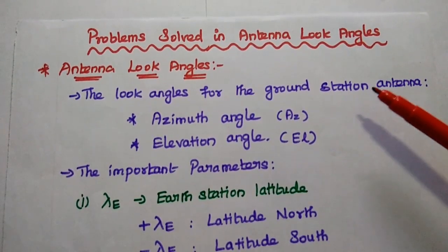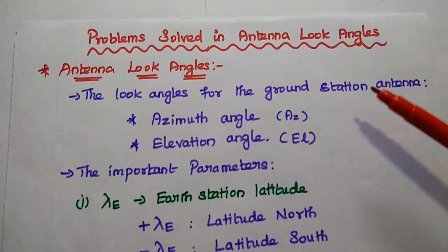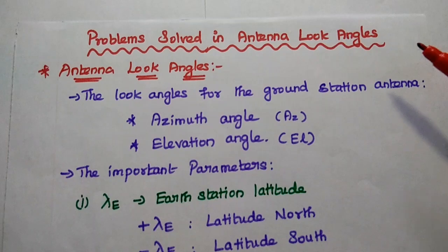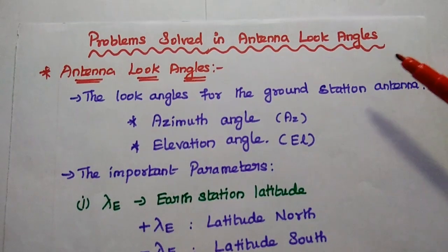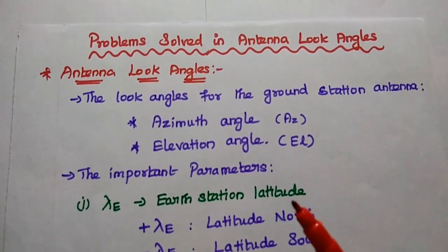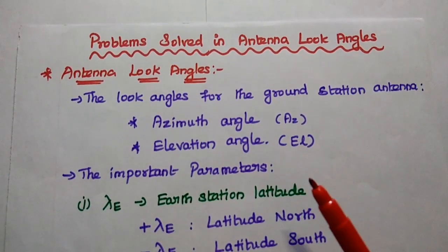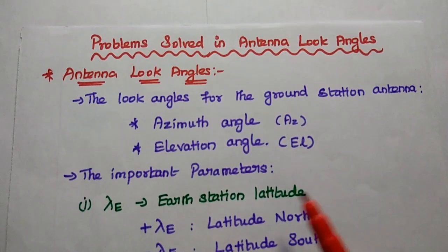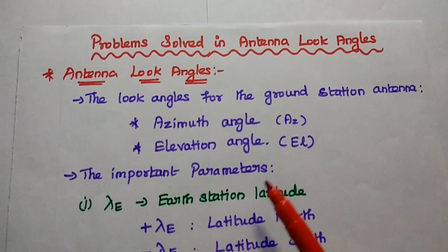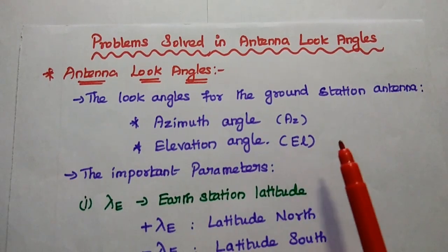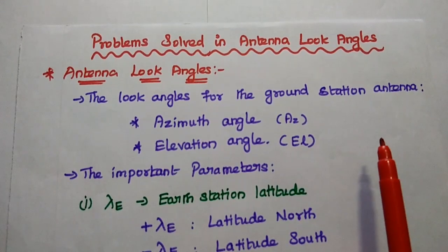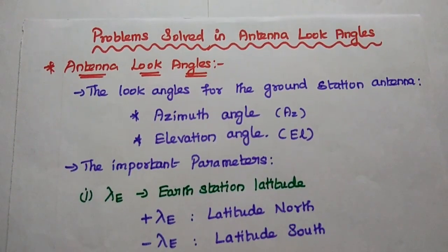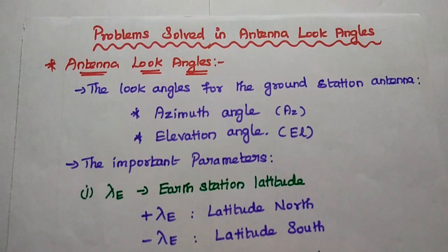Now we are going to solve an important problem in antenna look angles. Let's start with the basics of antenna look angles. The look angles for the ground station antenna are azimuth angle and elevation angle.